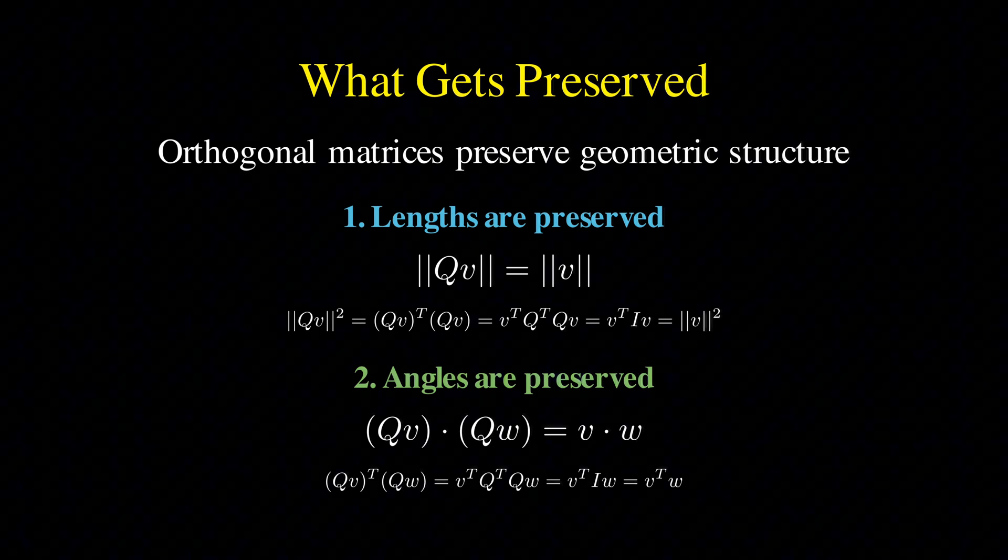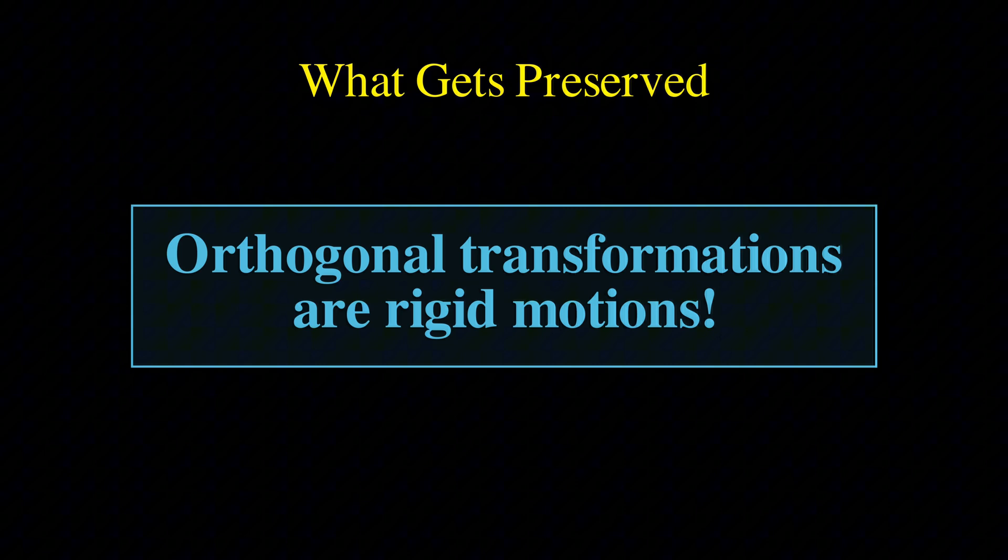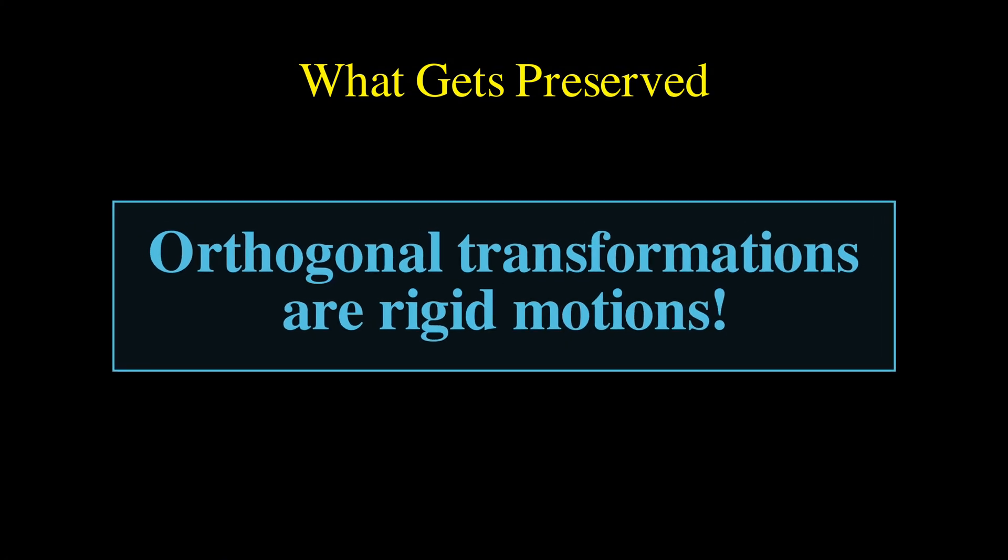If a transformation preserves both lengths and angles, then it's what we call a rigid motion. And the orthogonal transformations are rotations and reflections.